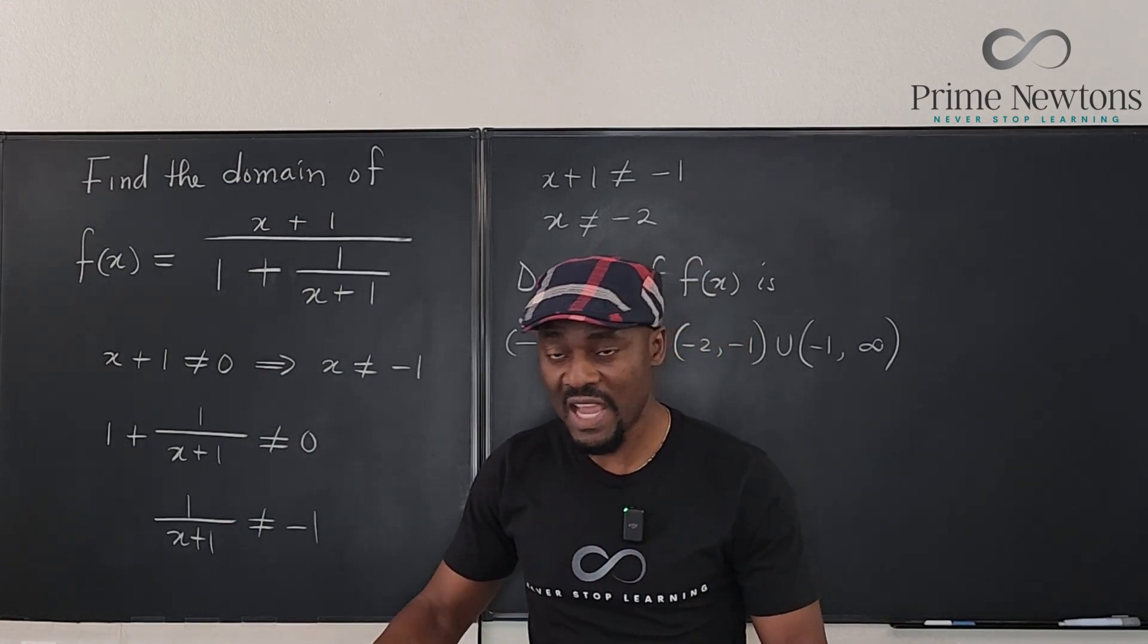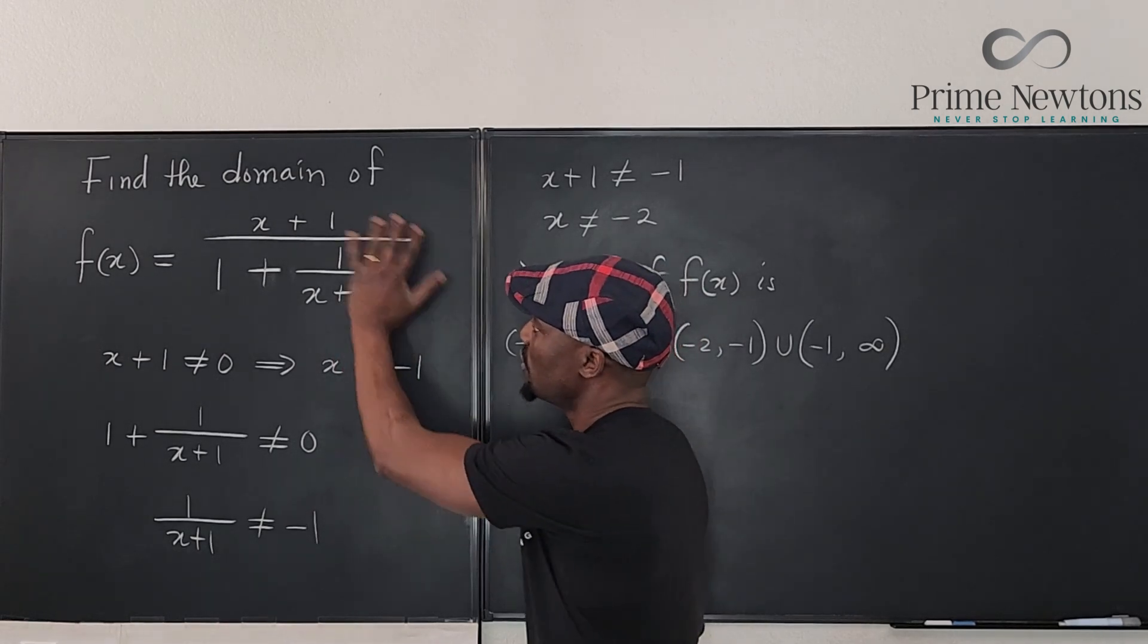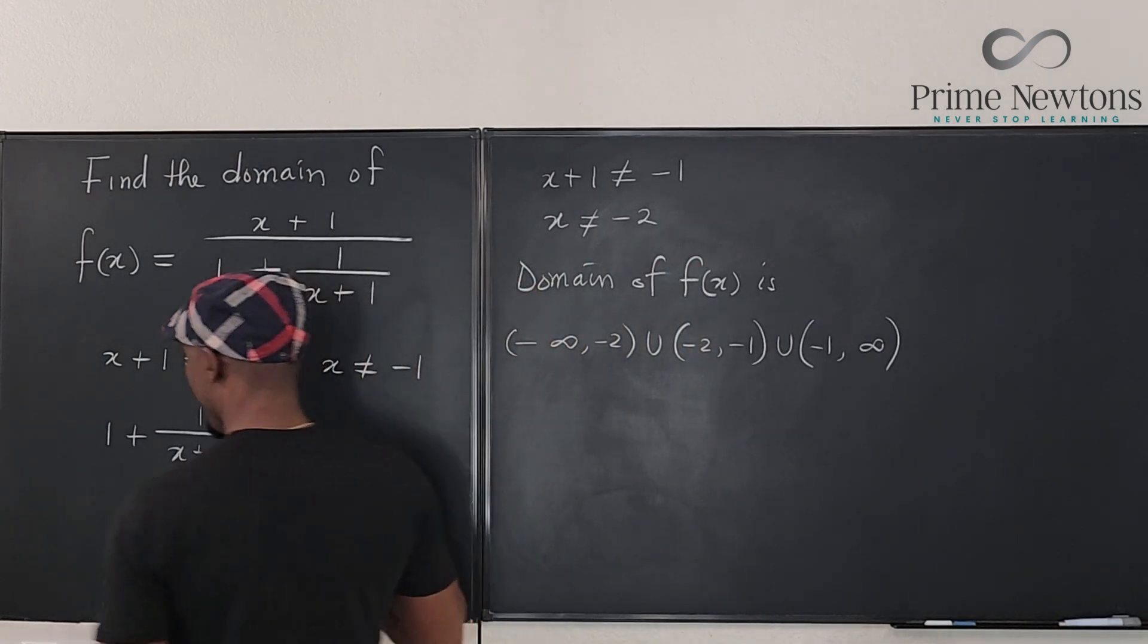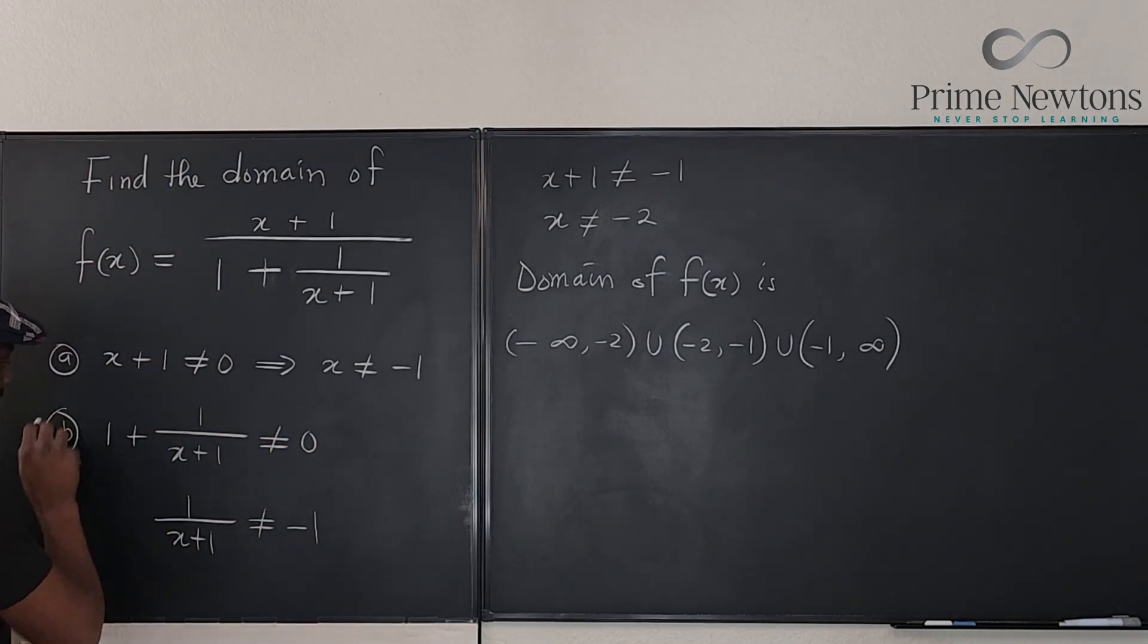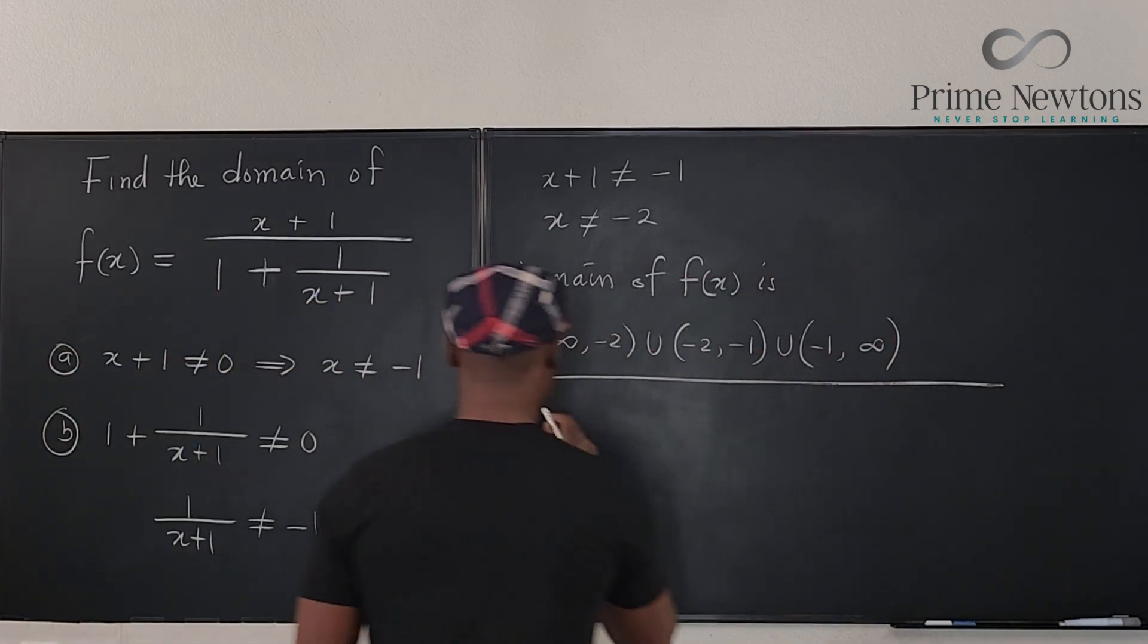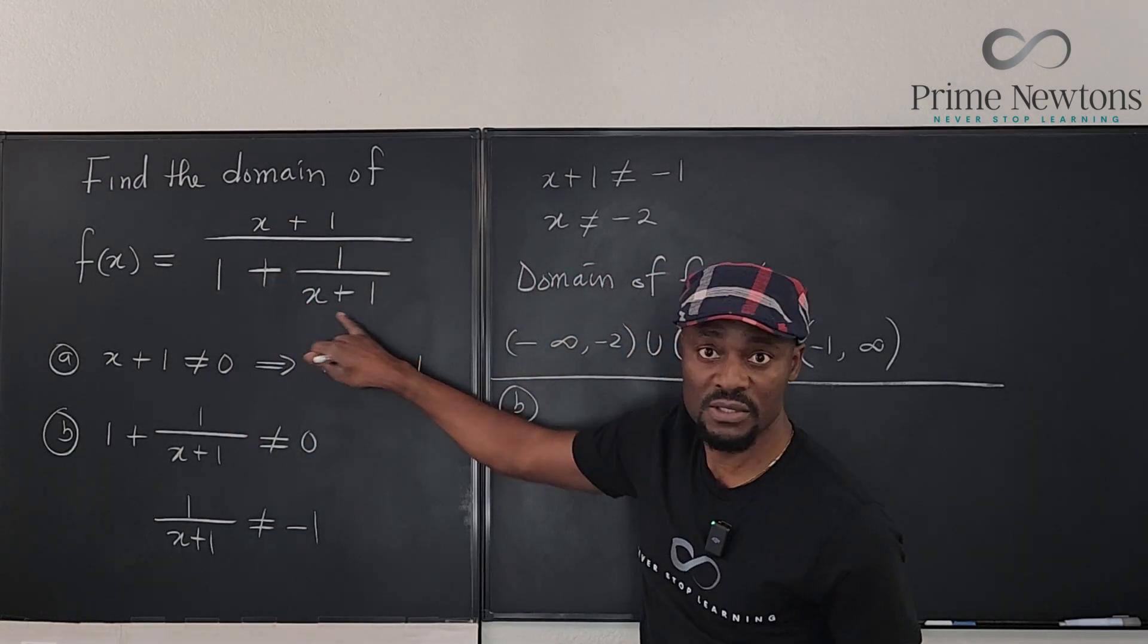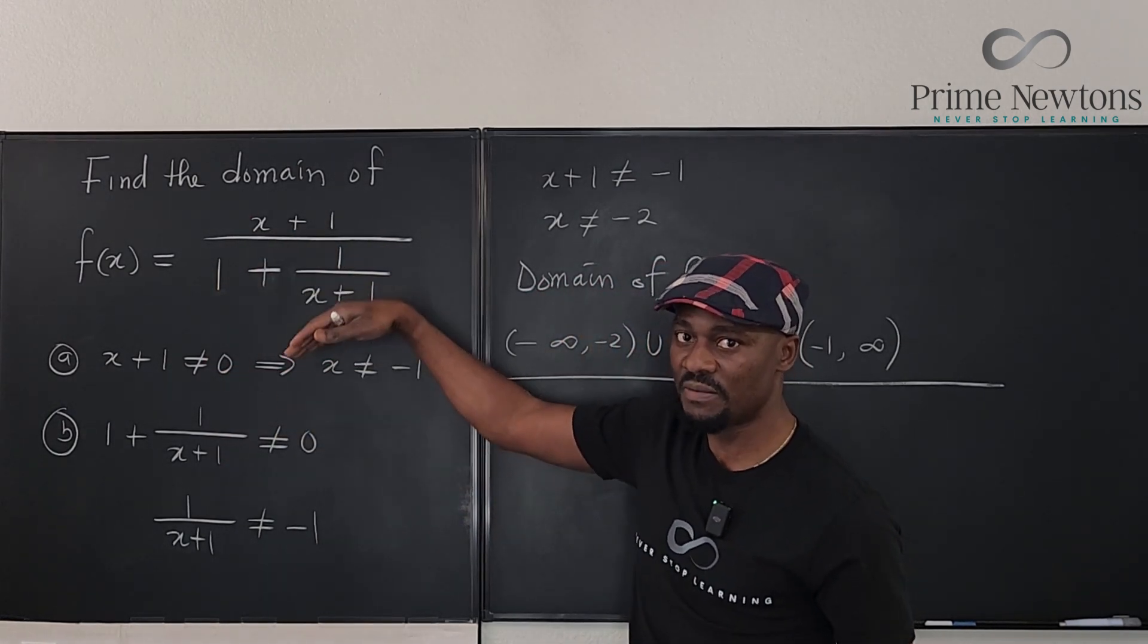The second approach you could take is after you've noticed the first part and you don't know what to do with this, you might as well simplify the expression and see if you can find the domain. So let's call this part A and call this B. I'm just going to show you another way to do part B. So suppose you're done with this part and you don't know what to do. Well, since you know that this is obvious, but you don't know what else you could do, why don't you get rid of the fraction within a fraction?